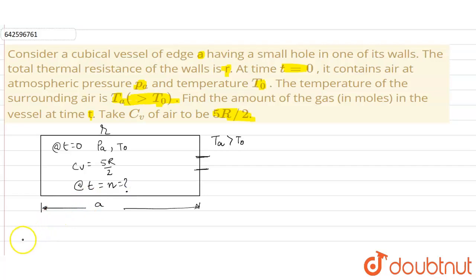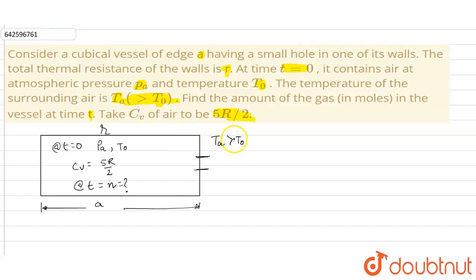As the gas can leak out of the hole, the pressure inside the vessel will remain equal to the atmospheric pressure Pa. Let n be the amount of gas in moles in the vessel at time t.